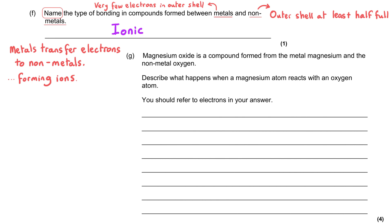Then we're told that magnesium oxide is formed from the metal magnesium and the non-metal oxygen, and we've been commanded to describe what happens when a magnesium atom reacts with an oxygen atom. And we've been given the big hint that we need to refer to electrons in our answer. To help you do this question, I recommend that you work out what the electron arrangement is for the magnesium and what it is for the oxygen.